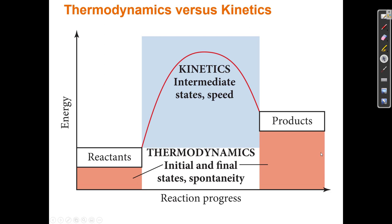We learned about kinetics in a previous chapter. Kinetics is the science that deals with how fast processes occur — we looked at the order of reactants, first-order and second-order reactions. In general we were looking at time: if I started a reaction, I wanted to know how much would be left after a certain time or how long a process might take. So when we're talking about kinetics we're really looking at a specific part of a reaction coordinate diagram.